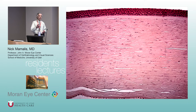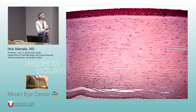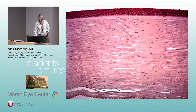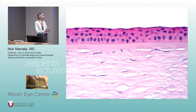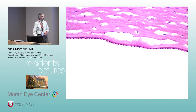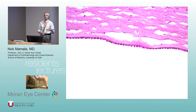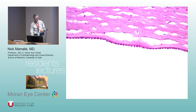Layers of the cornea: epithelium, Bowman's — which is not a true basement membrane but a condensed anterior piece of stroma — stroma, Descemet's membrane, which is a true basement membrane, and endothelium. Don't confuse Bowman's with a basement membrane. The endothelium consists of cells on the inside surface of the cornea.